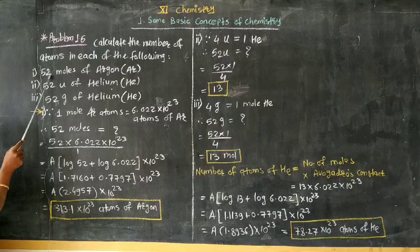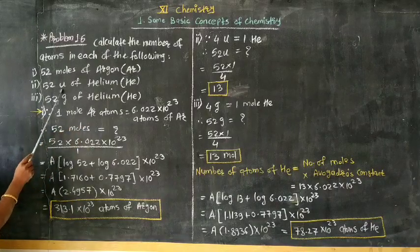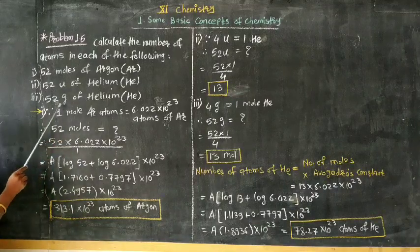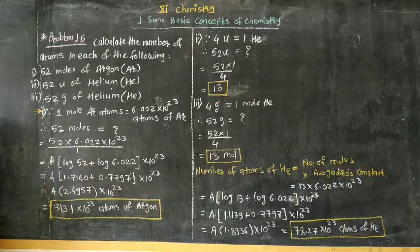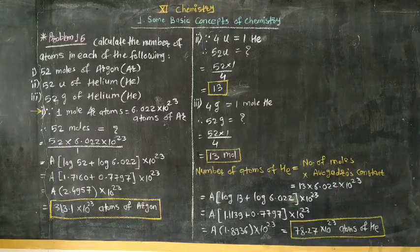First case: 52 moles of argon, symbol for argon AR. Second: 52 unified mass of helium HE, and third: 52 gram of helium HE. How to solve? Very simple concept actually.